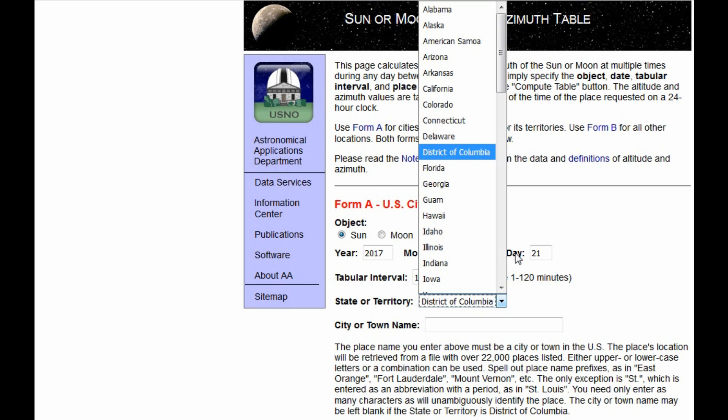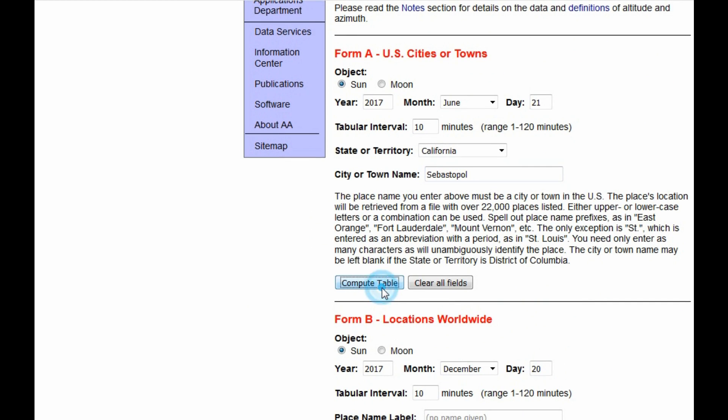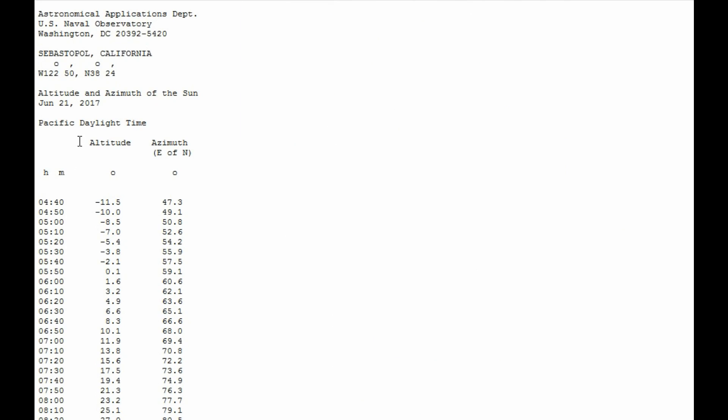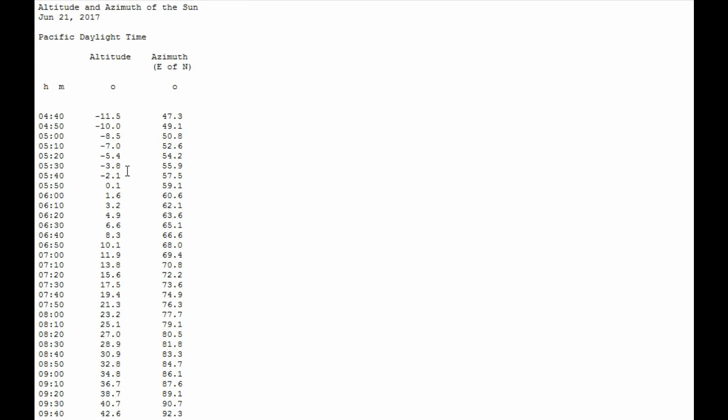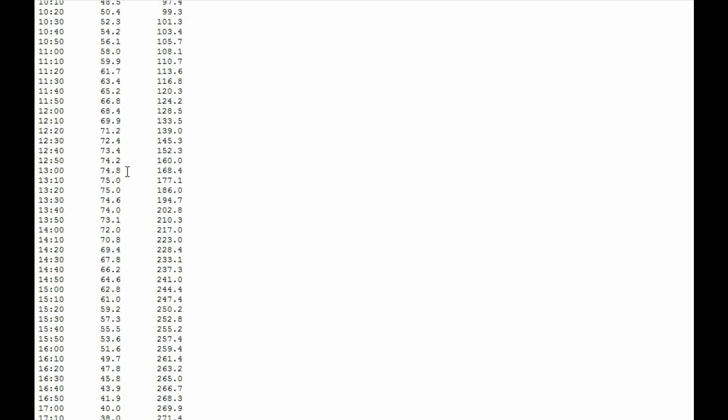The table tells, for each hour of the day, what the sun's altitude and azimuth are. Look at the column for altitude and scroll down to find the highest number. It looks like the sun peaked in the sky at 75 degrees. Luckily, this is the same answer we got when we used the equation and the sun path chart.